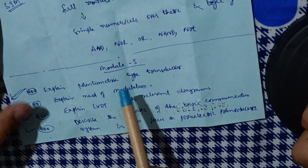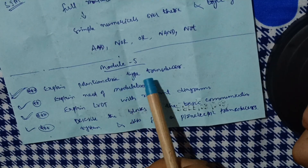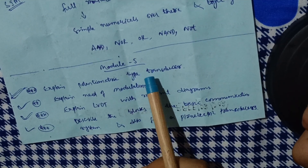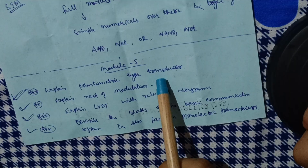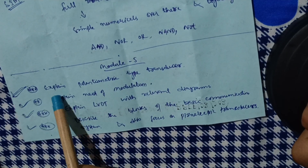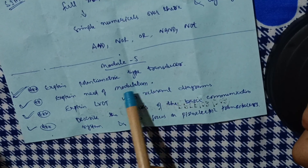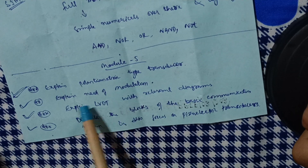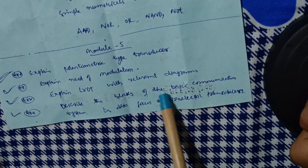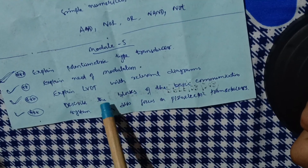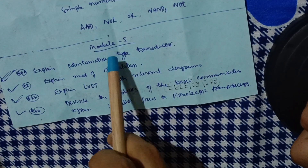Then module five comes up — this is the transducer module, which they have added this time in basic electronics. It was not in the 2018 scheme. It is actually the practical activity area of mechanical engineering, consisting of transducers. So: explain potentiometric type transducer; explain the need of modulation — they will give definitions like what do you mean by modulation; explain LVDT with relevant diagrams; describe the blocks of the basic communication system — this is the most important question; and also focus on piezoelectric transducer. This much content is enough for module five.